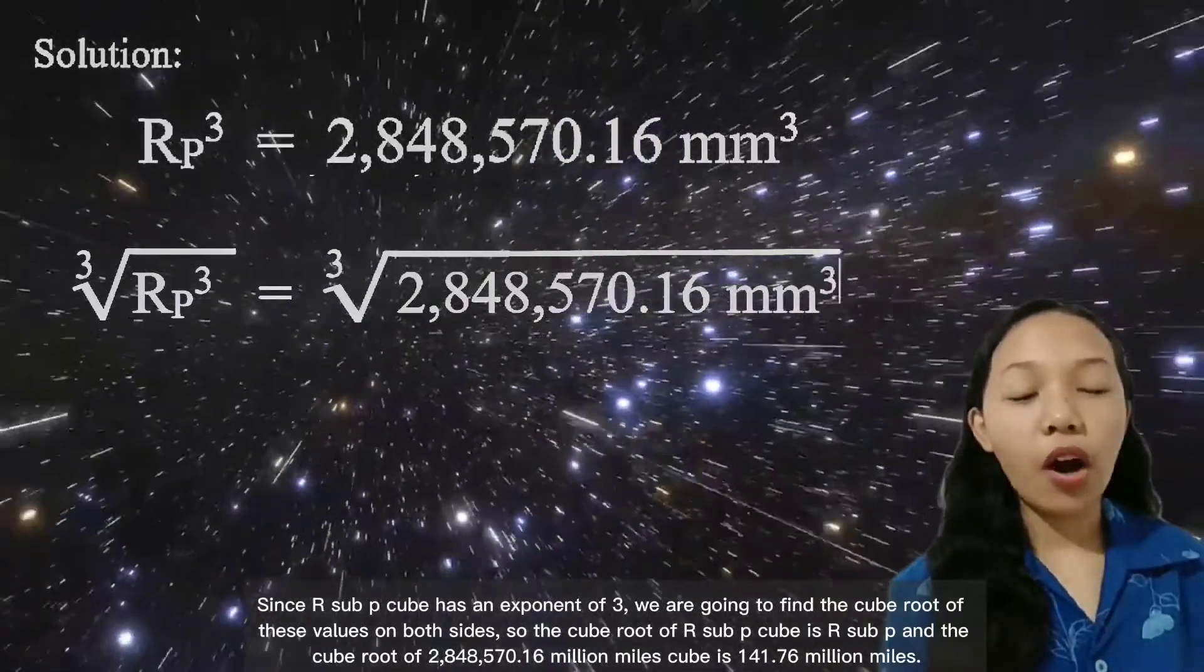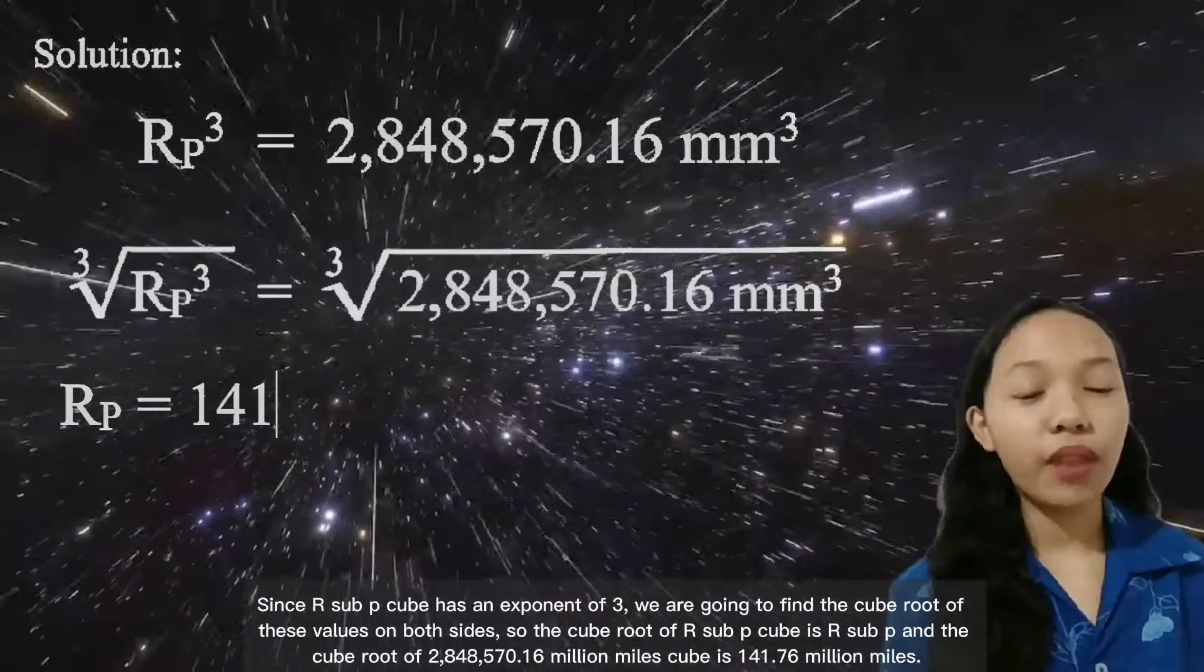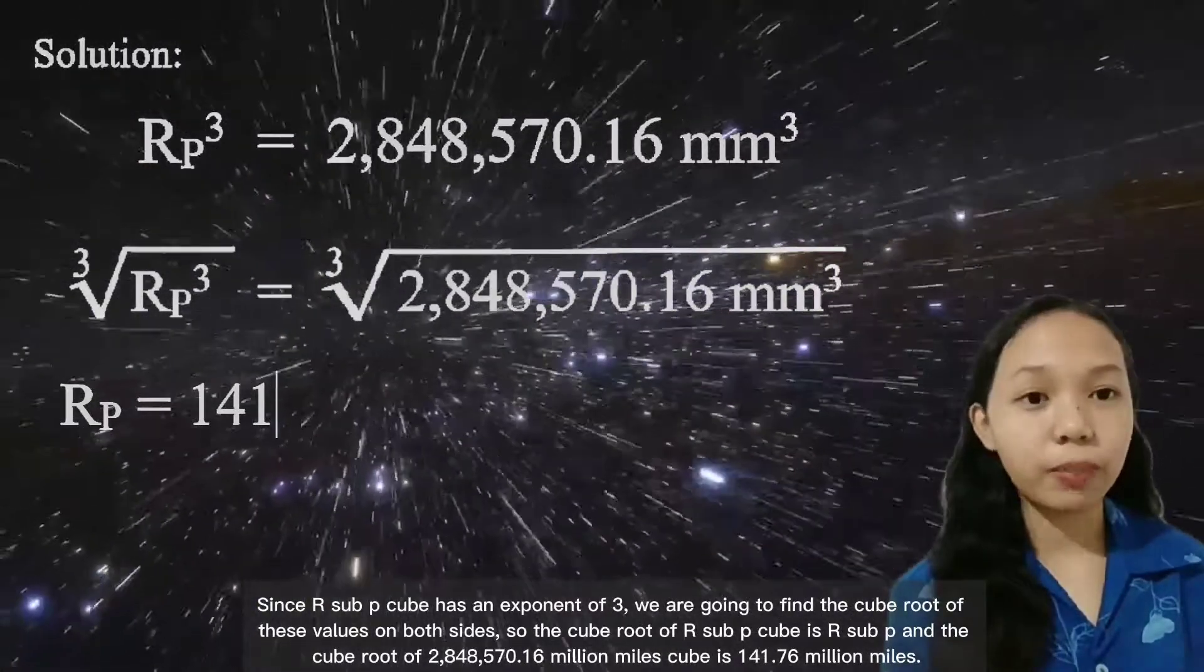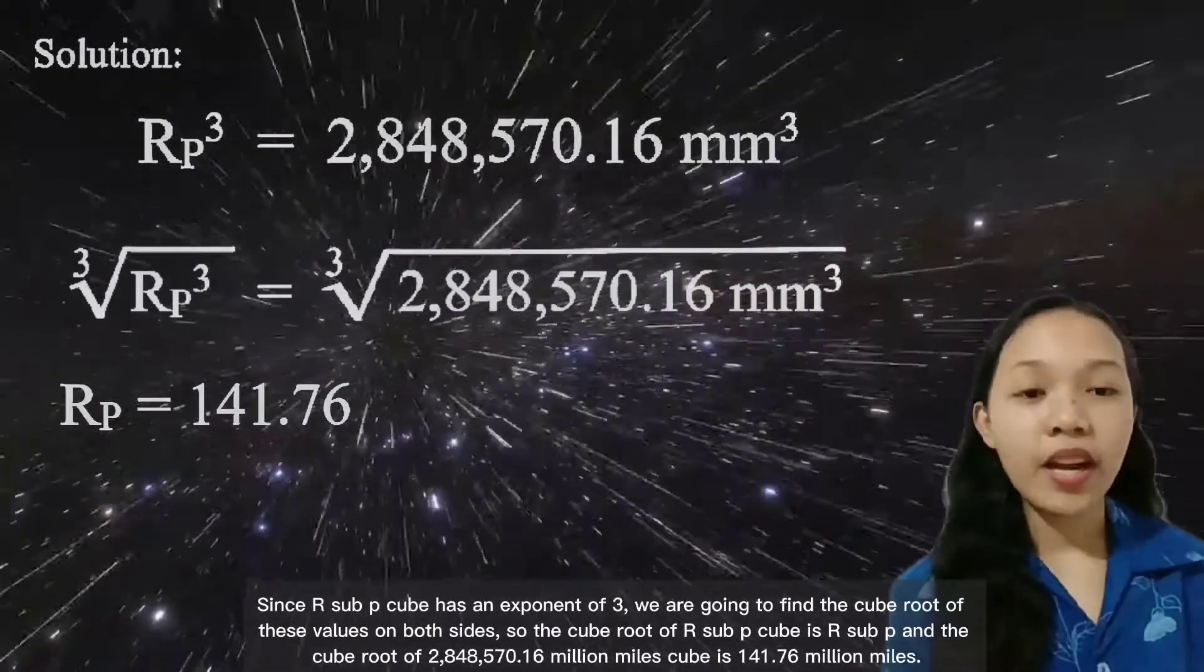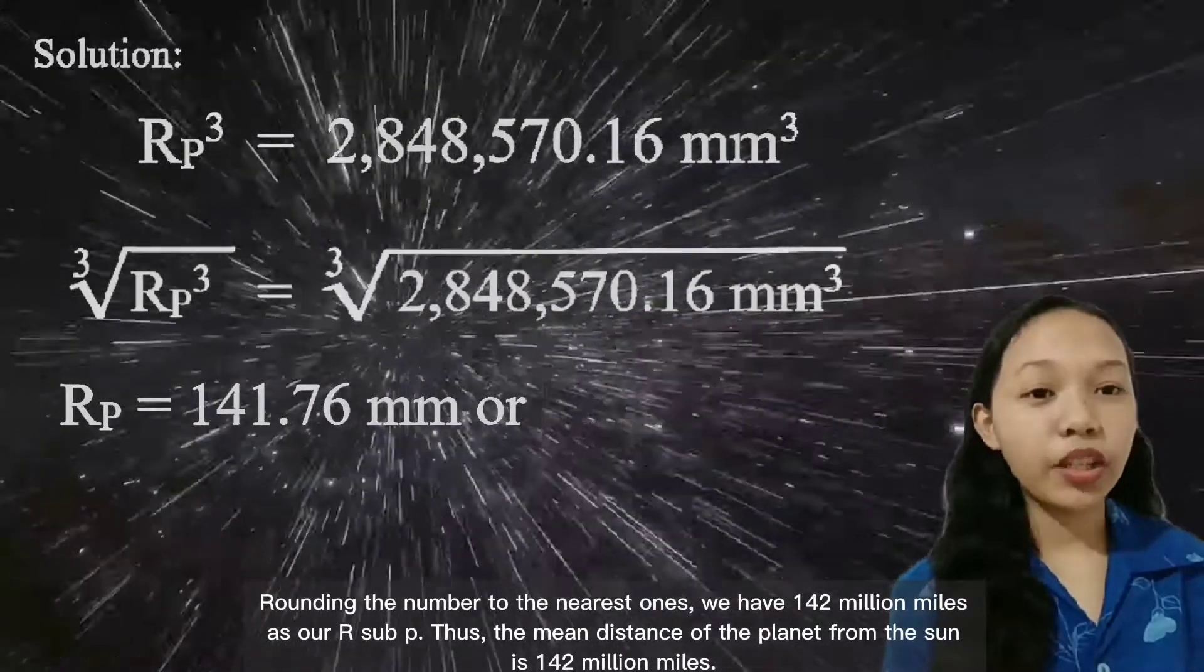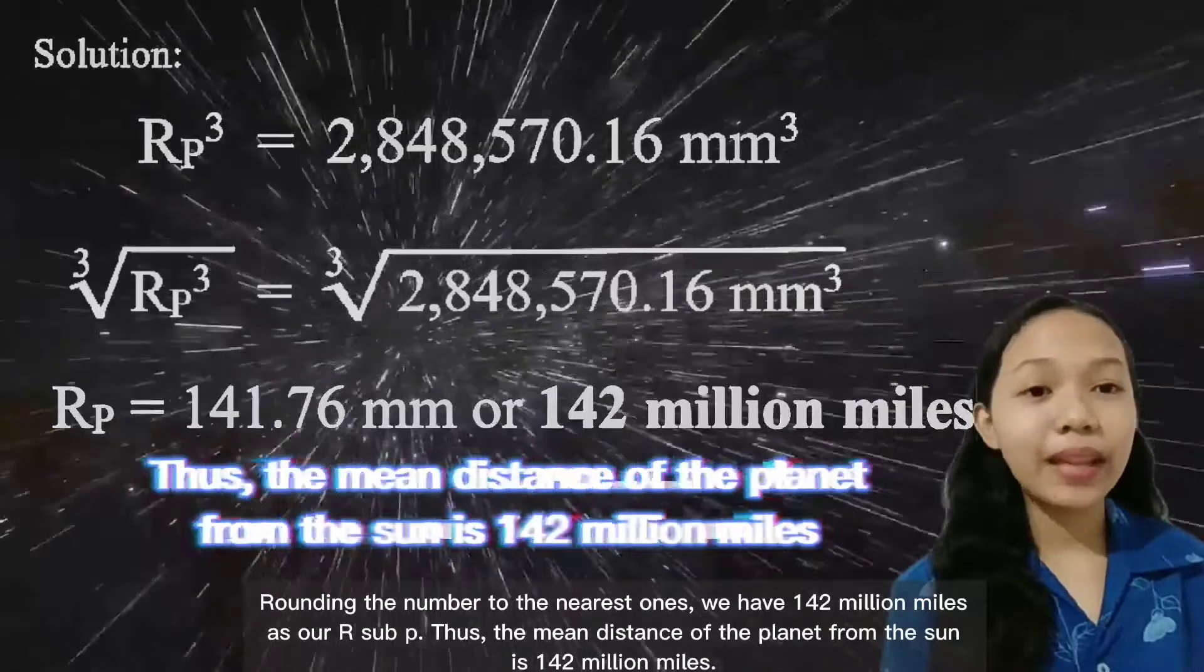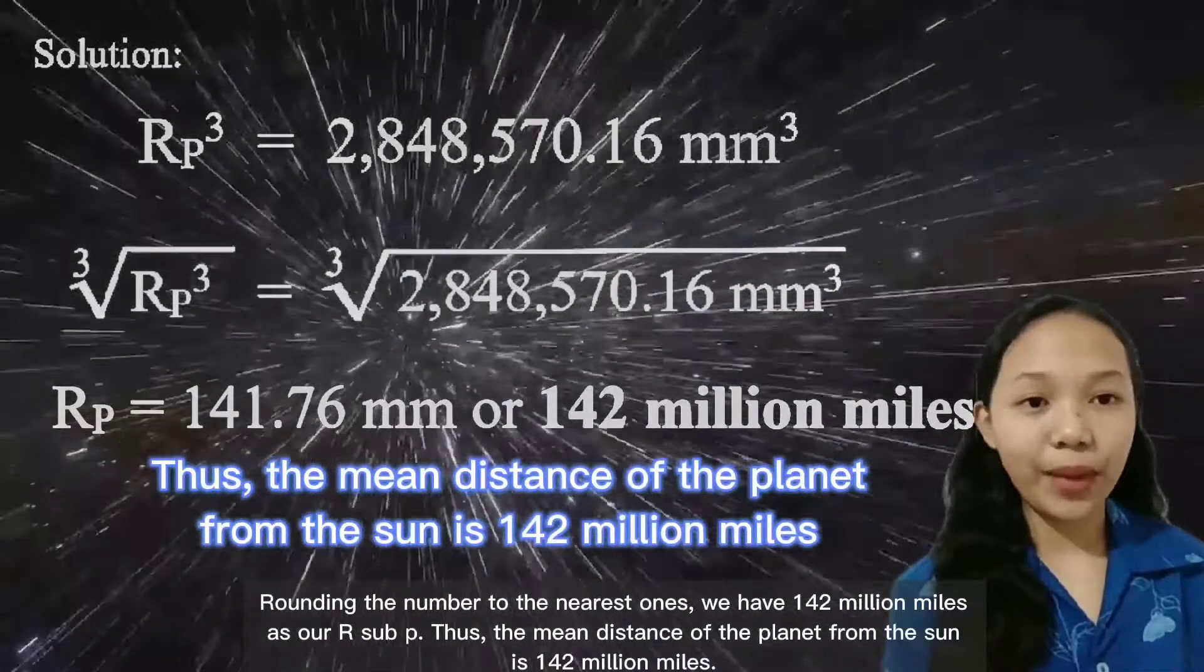So, the cube root of R sub P cubed is R sub P, and the cube root of 2,848,570.16 million miles cubed is 141.76 million miles. Rounding the number to the nearest ones, we have 142 million miles as our R sub P. Thus, the mean distance of the planet from the sun is 142 million miles.